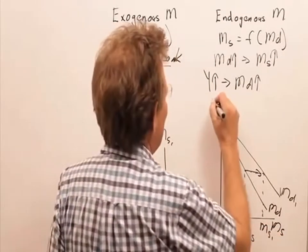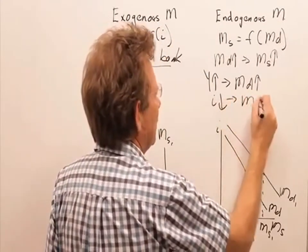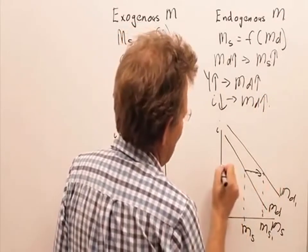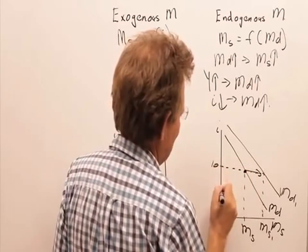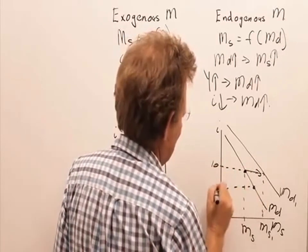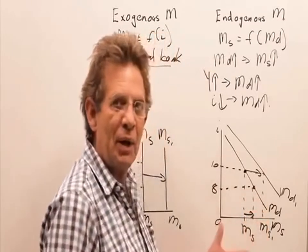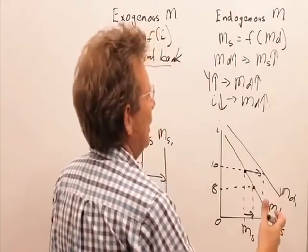The other one is if you change the interest rate, if you decrease interest rates, the quantity of money demanded will increase. And that means, in terms of your model, start here, 10% to 8%. You can see there is an increase in the quantity of money demanded, which brings about an increase in the supply of money.